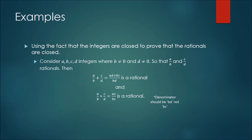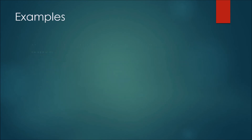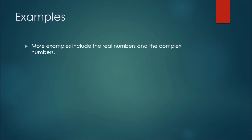If we consider a/b times c/d, we get ac/bd. Here bd is a non-zero integer and ac is an integer, so we're closed under multiplication. Some other examples of closed sets are the reals — adding or multiplying any two real numbers gives a real number — and the complex numbers, where adding or multiplying two complex numbers also gives a complex number.